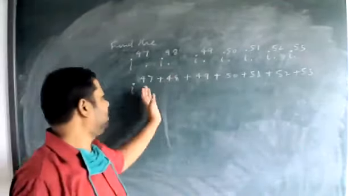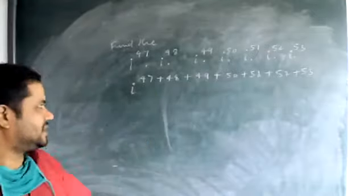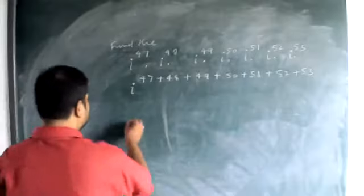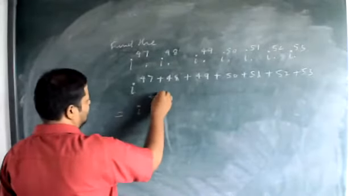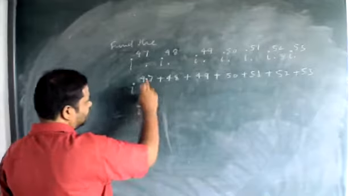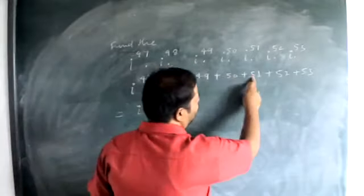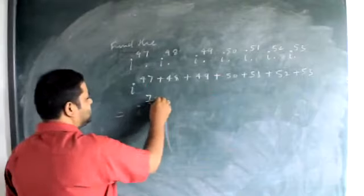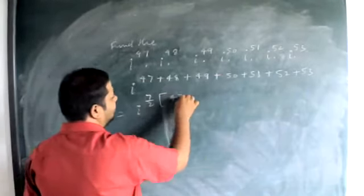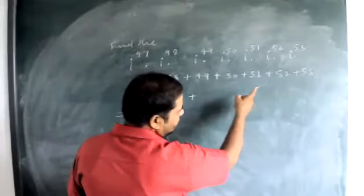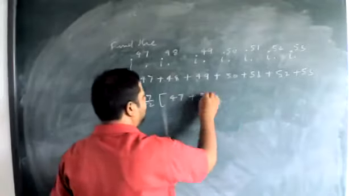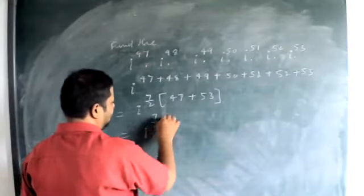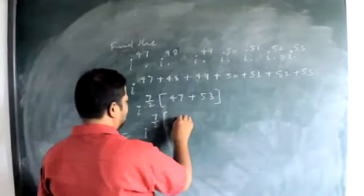This is an arithmetic series. The first term is 47, the last term is 53. There are 7 terms. Using the sum formula n/2 times (a + last term), that means 47 plus 53 is 100, times 7 by 2, giving 350.